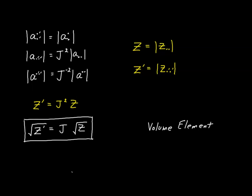Now, in other disciplines such as linear algebra, the Jacobian determinant plays a very important role when it comes to changing or transforming from one coordinate system to another. In tensor calculus, we're going to use the volume element instead of the Jacobian for roughly the same purpose. The volume element, the square root of z, is going to be roughly equivalent to the Jacobian that's used in linear algebra.